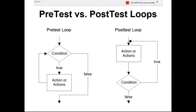This flowchart illustrates post-test versus pre-test loops. In a post-test loop, the statements or actions are executed first, then we check the condition — if true, we execute again; if false, we terminate. In a pre-test loop, we check the condition first — if true, we execute the statements; if false, we terminate and go to the outer statements.